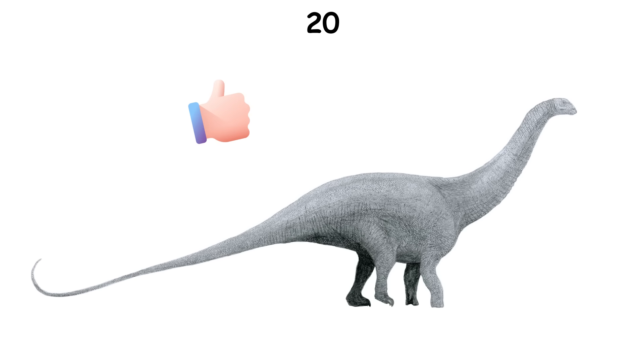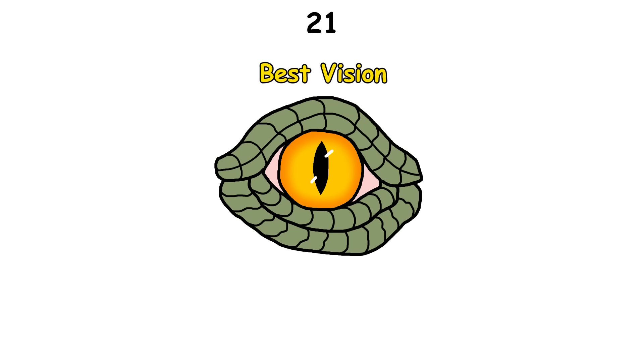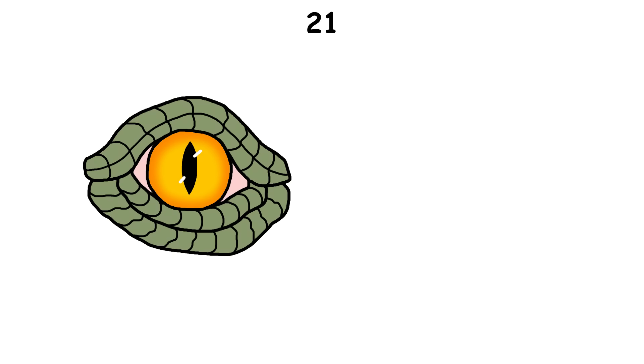The idea that a T. rex couldn't see its prey if they remained still is false. T. rex had some of the best vision among land predators, and its eyesight is estimated to be 13 times sharper than a human's.